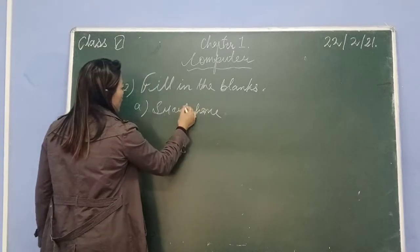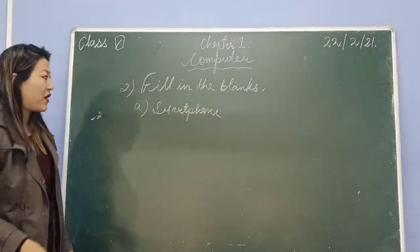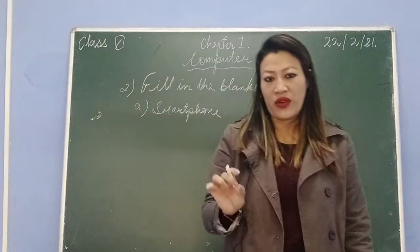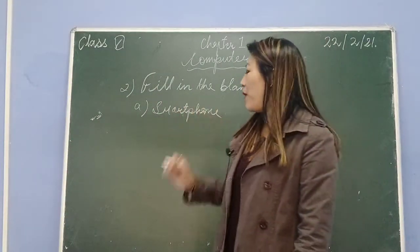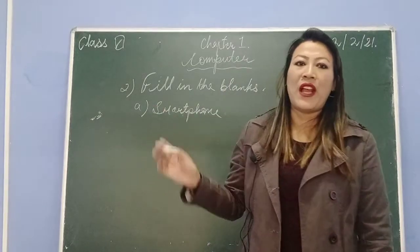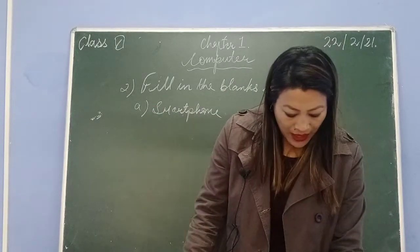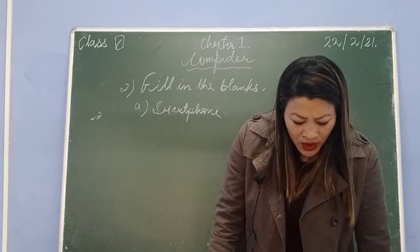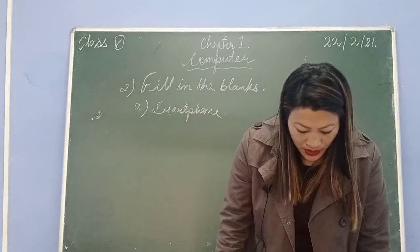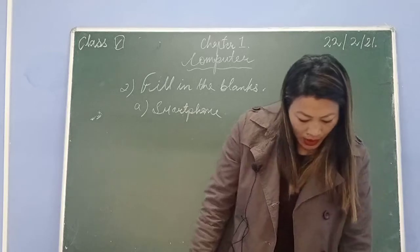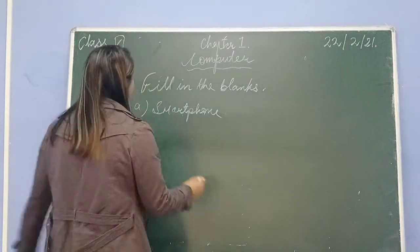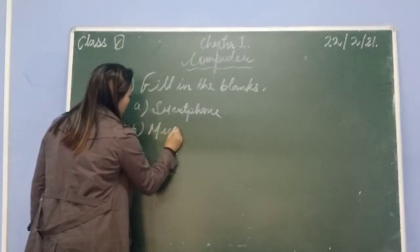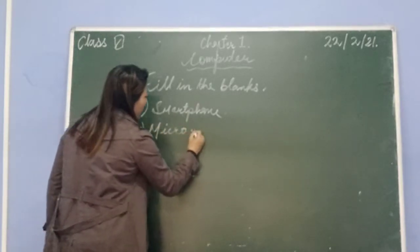The smartphone doesn't have a physical keyboard - it has a virtual keyboard where you type directly on the screen, and it also helps you to make calls. Number two: a dash are smaller computers that run on a microprocessor in their central processing unit. The answer is microcomputer.